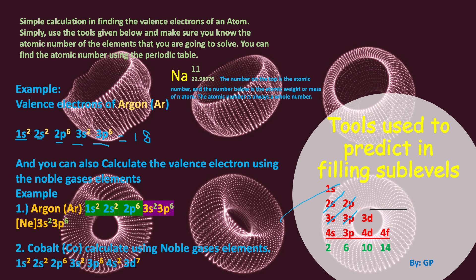We can also calculate the valence electrons using the noble gas method. In the electron configuration of argon, the portion highlighted in green is the noble gas element, and the last two electrons highlighted in purple are the valence electrons. So you always take the last two electrons at the front — those are the valence electrons.